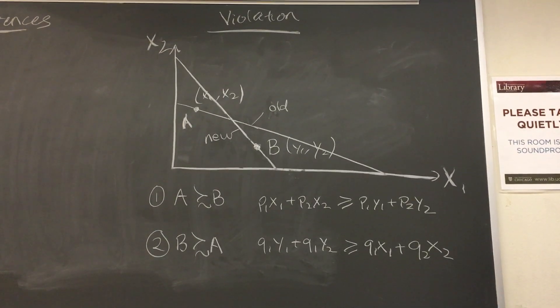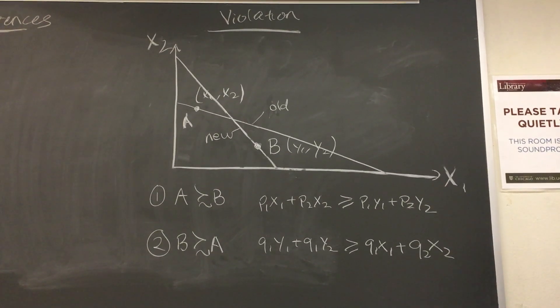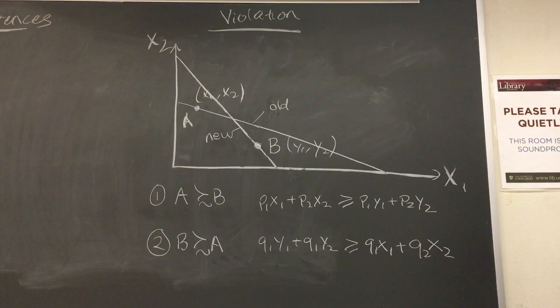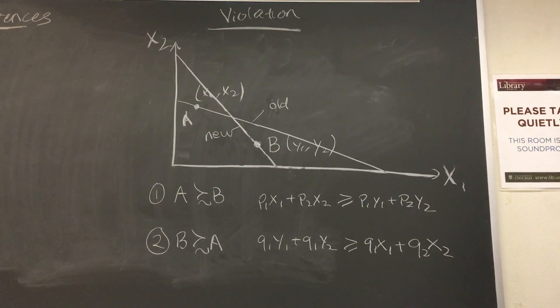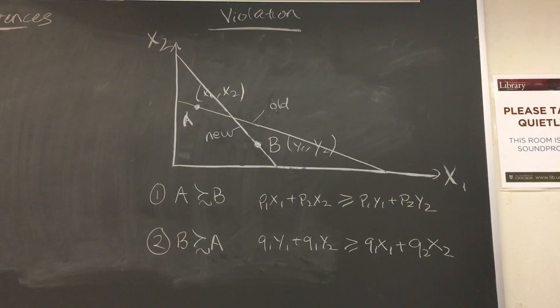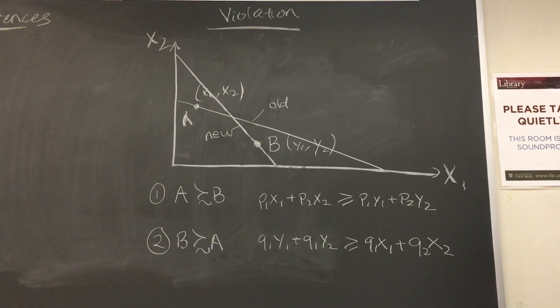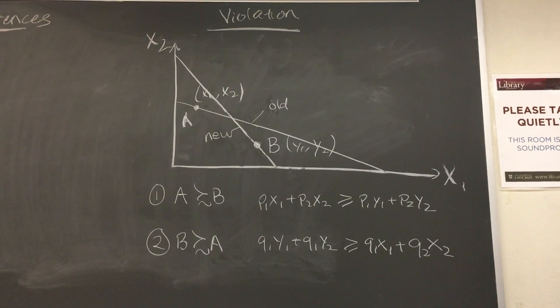This is a clear contradiction. How can a consumer prefer bundle A to B, but also prefer B to A at the same time? Remember that preferences are assumed stable over time. That is, preferences do not change when prices change.